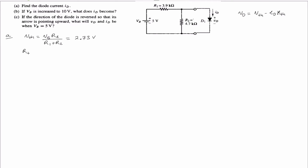We can then find Rthevenin. Rthevenin is equal to — if we short out the voltage source, we can find Rthevenin. Rthevenin is R1 in parallel with R2, and that is equal to 2.13 kOhms.